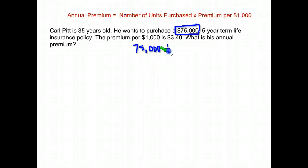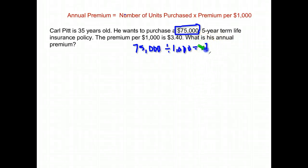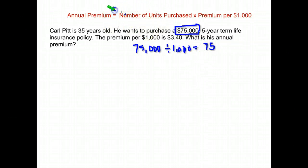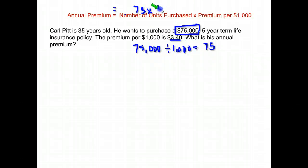The first thing we have to do is take the amount he wants to be insured for and divide by a thousand. That gives us the number of units — that's what they call them — that he's purchasing. So seventy-five thousand divided by a thousand is seventy-five units. Then we can calculate his premium: the number of units, seventy-five, times the price per unit, three dollars and forty cents.